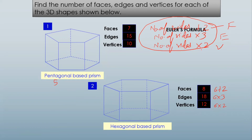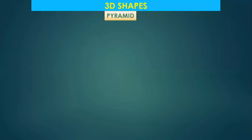Is Euler's formula satisfied here? F plus V equals E plus 2. Faces are seven, vertices are 10 — seven plus ten is 17. Edges are 15, and 15 plus two is also 17. So this is how Euler's formula is satisfied for any of the solids, any 3D shape you can see in nature.